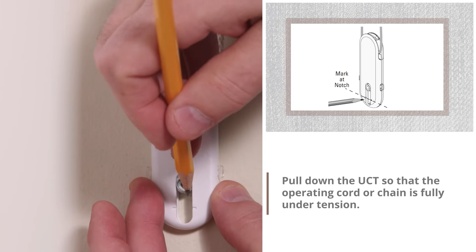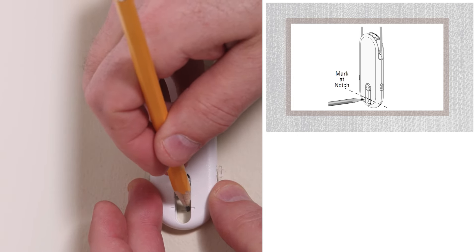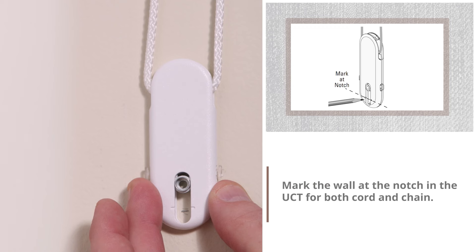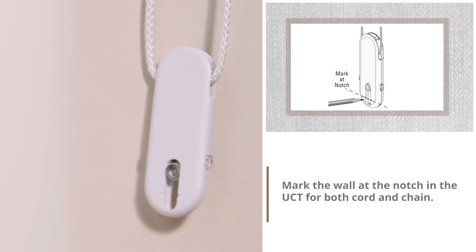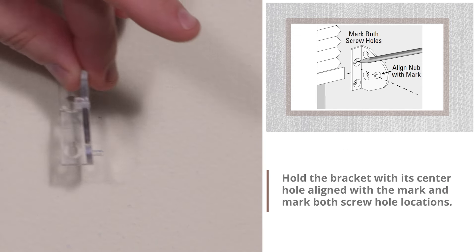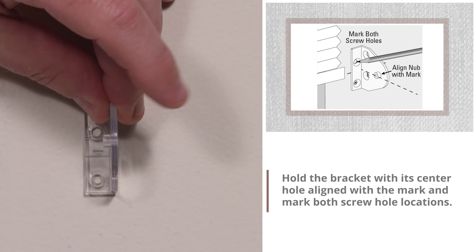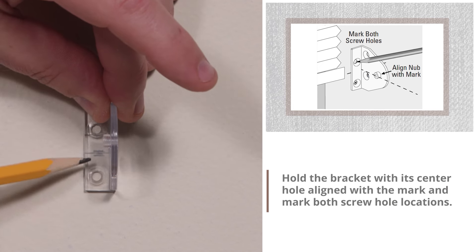Pull down the UCT so that the operating cord or chain is fully tensioned. Mark the wall at the notch in the UCT for both cord and chain. Hold the bracket with its center hole aligned with the mark and mark both screw hole locations.